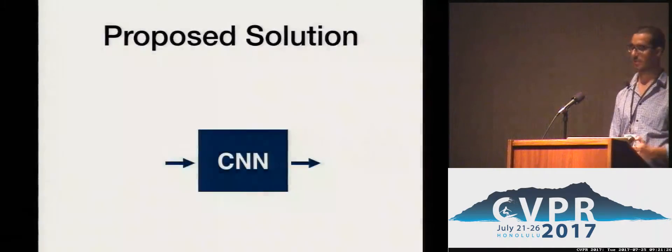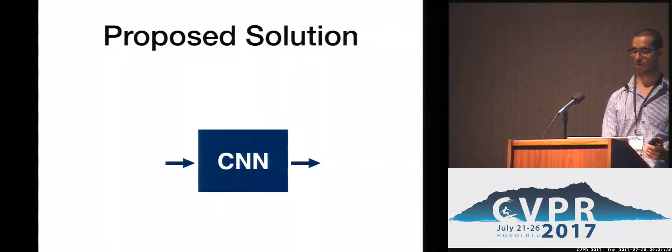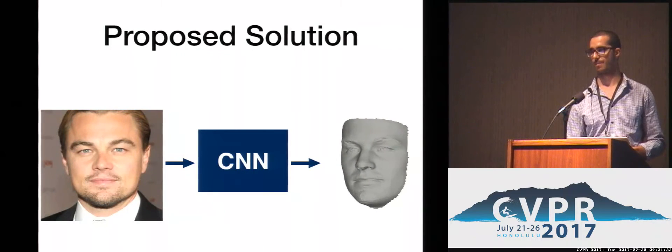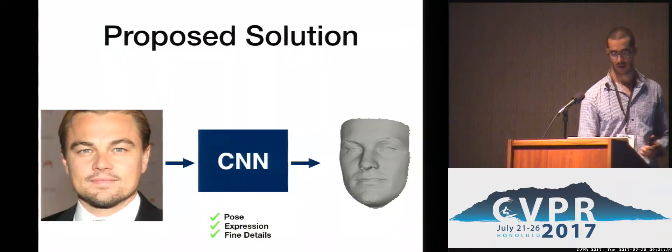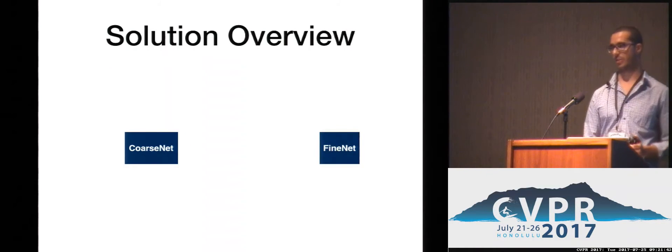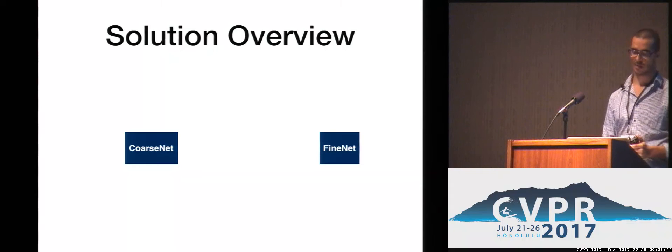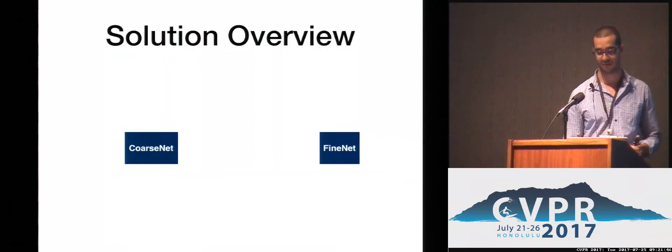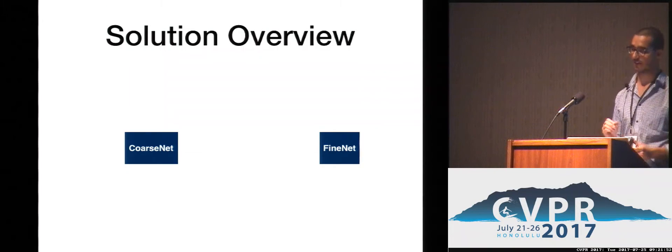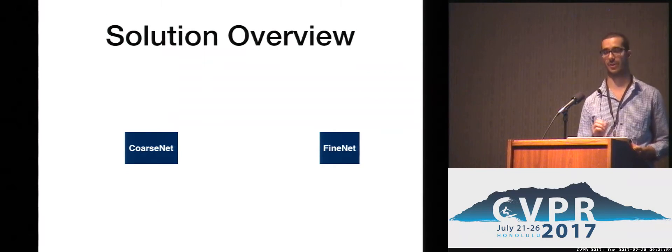To overcome this limitation, we propose a coarse-to-fine CNN-based approach. Our solution is composed of two networks, coarse-net and fine-net. The objective of coarse-net is to recover the coarse geometric structure of the face, the expression, and the pose. The purpose of fine-net is to recover subtle structures such as wrinkles.